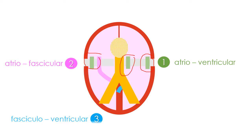Third, we have the fasciculoventricular accessory pathways connecting one of the fascicles of the bundle branch system directly to the ventricular myocardium, bypassing the distal Purkinje network.